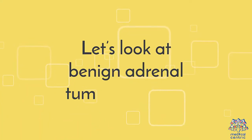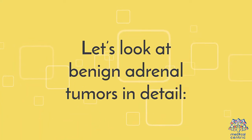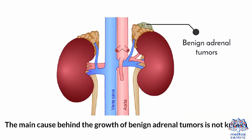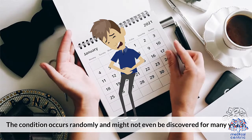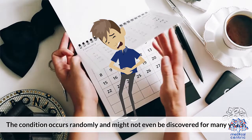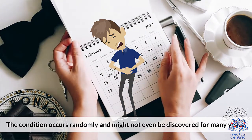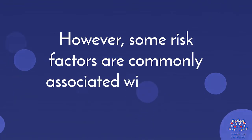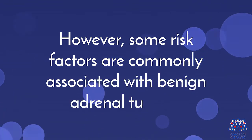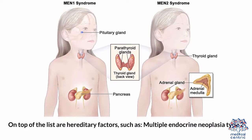However, in some cases they can become quite large and secrete hormones that cause a chemical imbalance in the body. The main cause behind the growth of benign adrenal tumors is not known. The condition occurs randomly and might not even be discovered for many years. However, some risk factors are commonly associated with benign adrenal tumors.